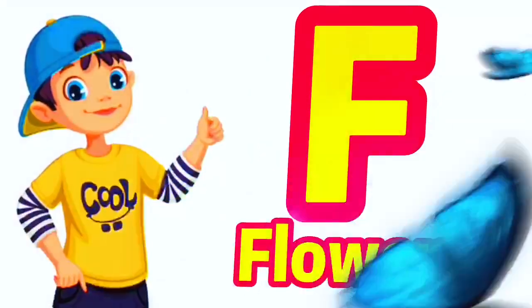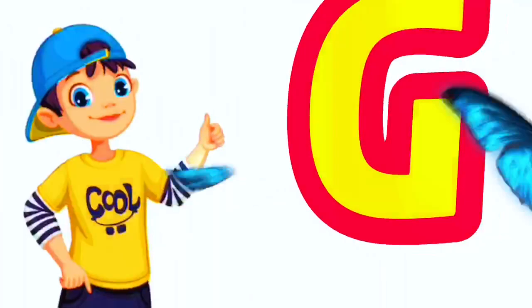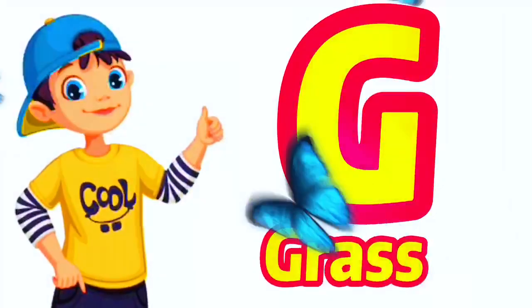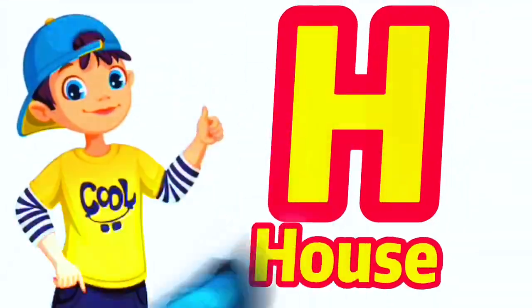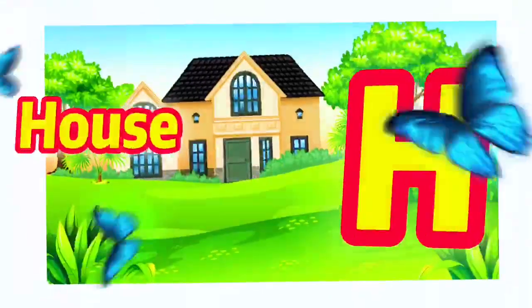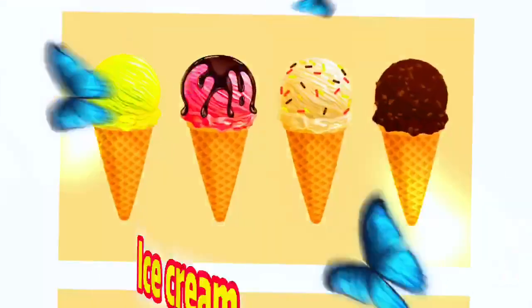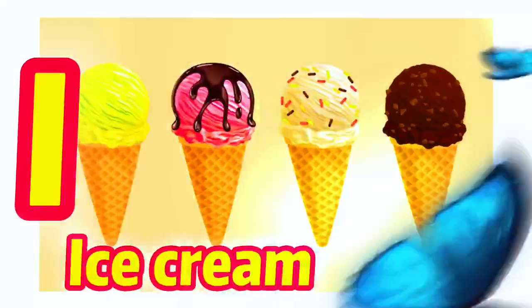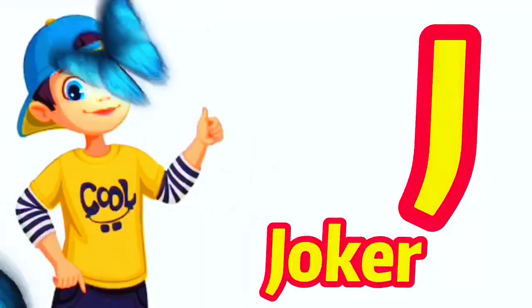A for flowway, G for grass, H for house, I for ice cream, J for joker.